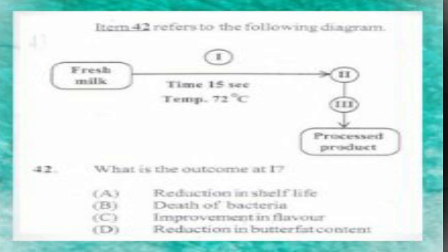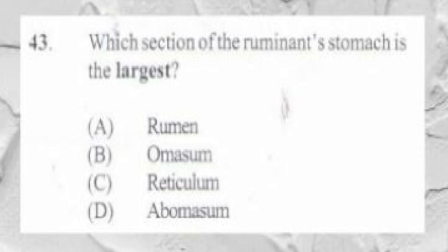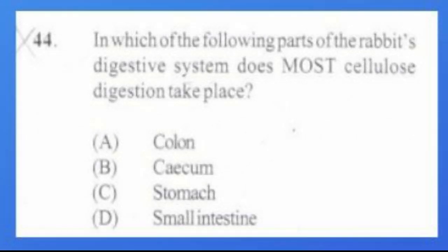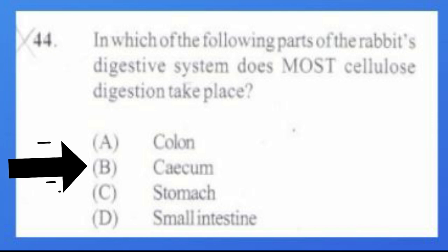Question number 43. Which section of the ruminant's stomach is the largest? A. Rumen, B. Omasum, C. Reticulum, D. Abomasum. The answer is A, rumen. Question number 44. In which of the following parts of the rabbit's digestive system does most cellulose digestion take place? A. Colon, B. Cecum, C. Stomach, D. Small intestine. The answer is B, cecum.